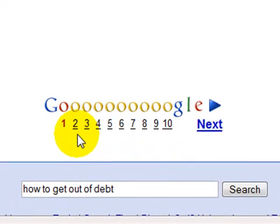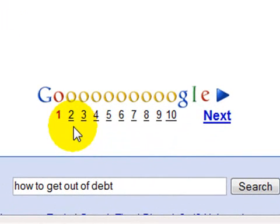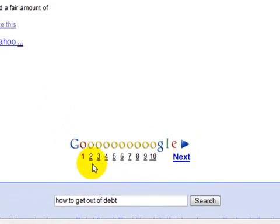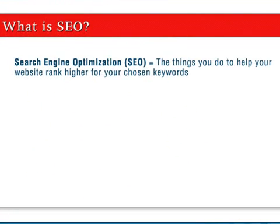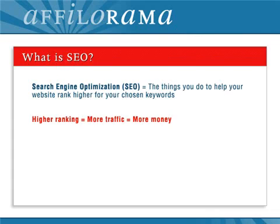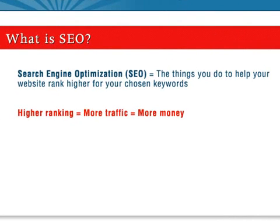But if your website doesn't appear in the first few pages of search results, you're unlikely to get a lot of people clicking through. In fact, very few web searchers will bother looking past three pages of search results, and most people won't even make it past page one. Search engine optimization, or SEO for short, refers to the things you can do for your website to help it appear closer to the top of the search engine rankings for your important keywords. The closer to the top you are, the more traffic you will get. The more traffic you get, the more money you make — an equation that makes a lot of sense to affiliates.